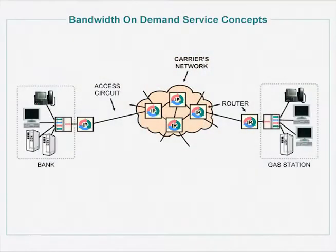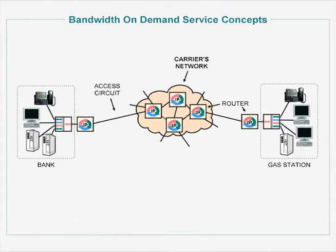An easy example of where packet switching could be used is credit card authorizations at a gas station. On the right side of the graphic, we have a gasoline station with a point-of-sale terminal, a lottery terminal, and an inventory system, connected via a premise router onto a packet network built by the phone company. On the left is the bank's payment processing division. When someone swipes a card, punches in the purchase amount, and presses send, a packet gets routed from one router to another and delivered to the bank.